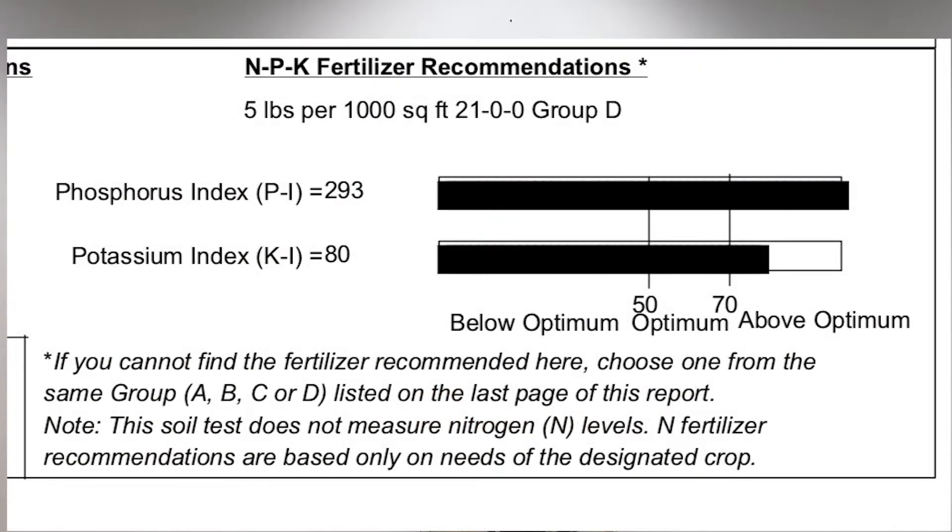The next thing we really want to look at is the phosphorus index and the potassium index, or the nitrogen, phosphorus, and potassium fertilizer recommendations. If we take a closer look, we'll see that our phosphorus index is pretty high, our potassium index is right where it needs to be, and what they're recommending for NPK fertilizer is five pounds per 1,000 square feet of 21-0-0 or Group D fertilizer.